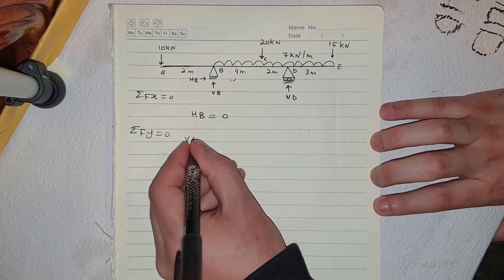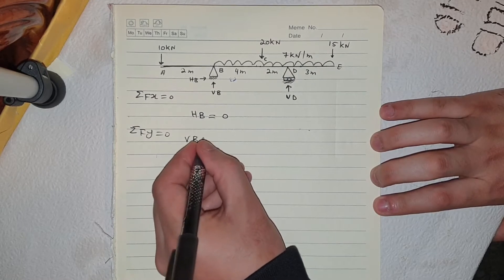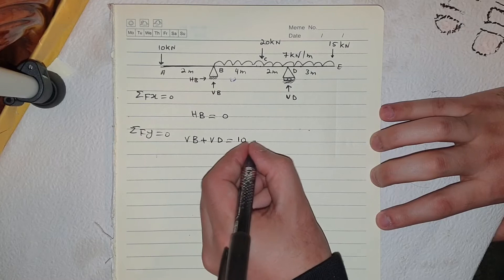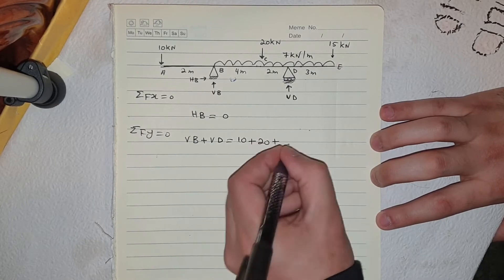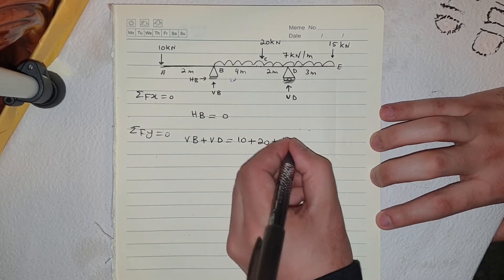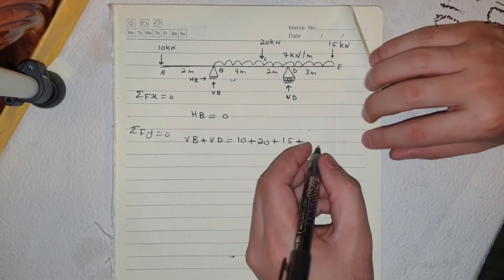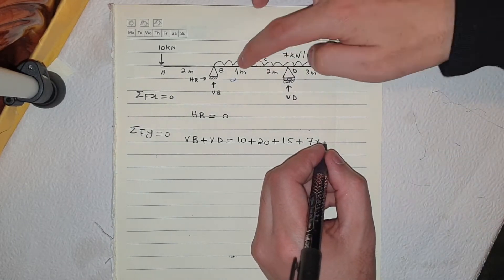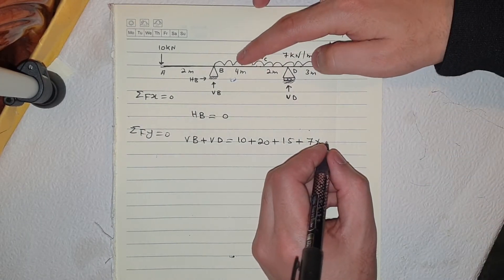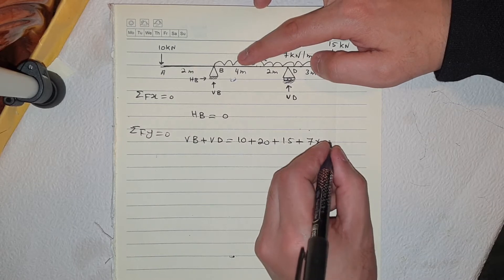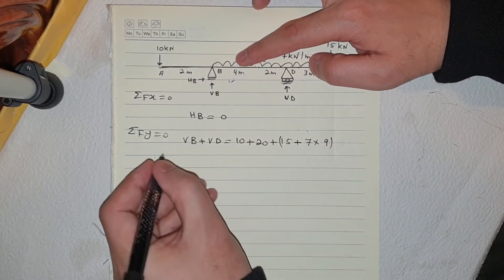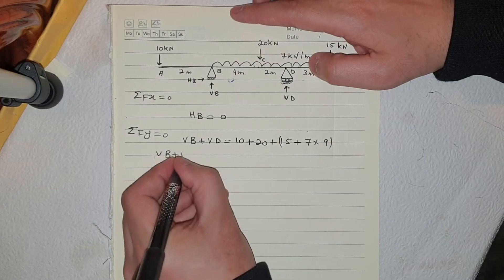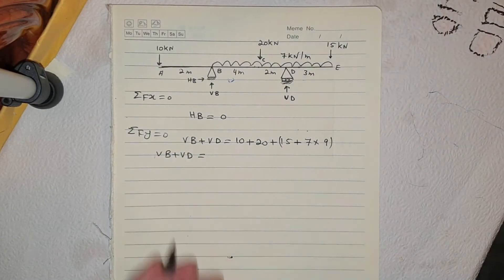The second step: we take summation of Fy which is equal to zero. So we have Vb plus Vd equal to 10 plus 20 plus 15, plus the UDL which is 7 times the distance. The distance is six plus three, which is nine.